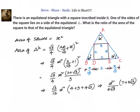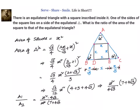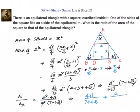Now let us divide one by the other. Let area of square be A1 and area of triangle be A2. A1 by A2 equals x squared divided by x squared by 4 root 3, which we can write as 4 root 3 divided by 7 plus 4 root 3. Cancelling x squared, the area ratio is 4 root 3 divided by 7 plus 4 root 3. We can also write this as 12 divided by 12 plus 7 root 3.